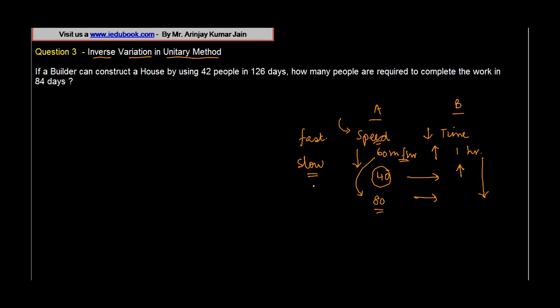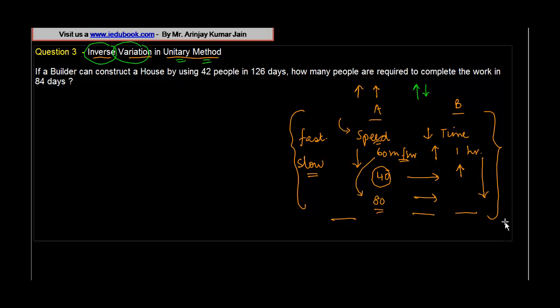In these cases, instead of a direct correlation wherein one thing increases so the other also increases, the situation is different. If one increases, the other goes down. These cases are basically known as inverse variation cases of unitary method.